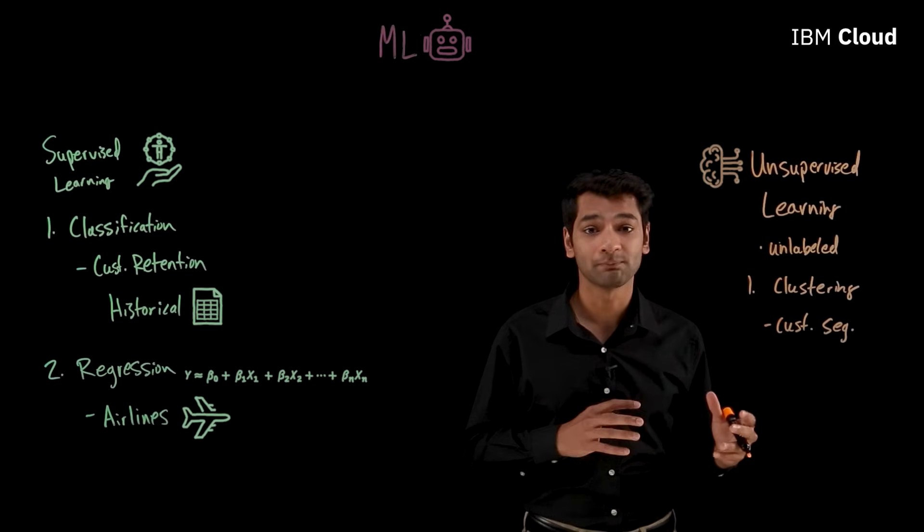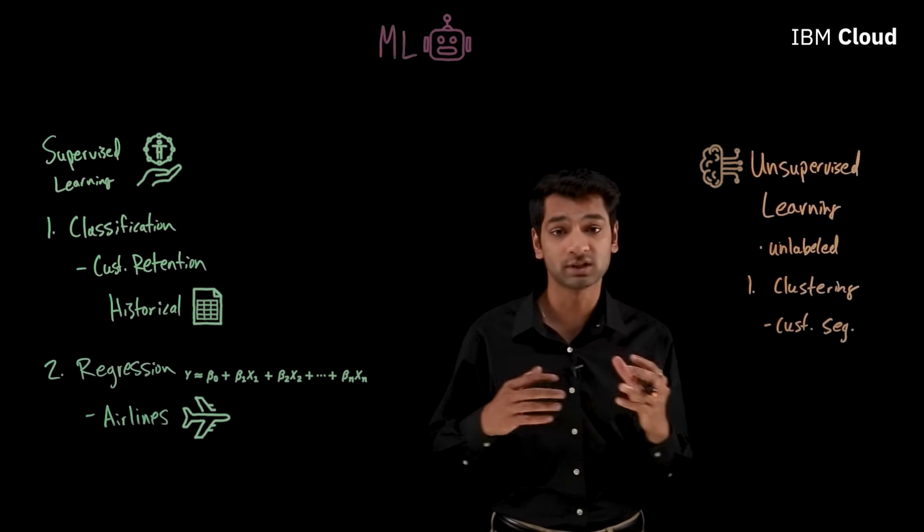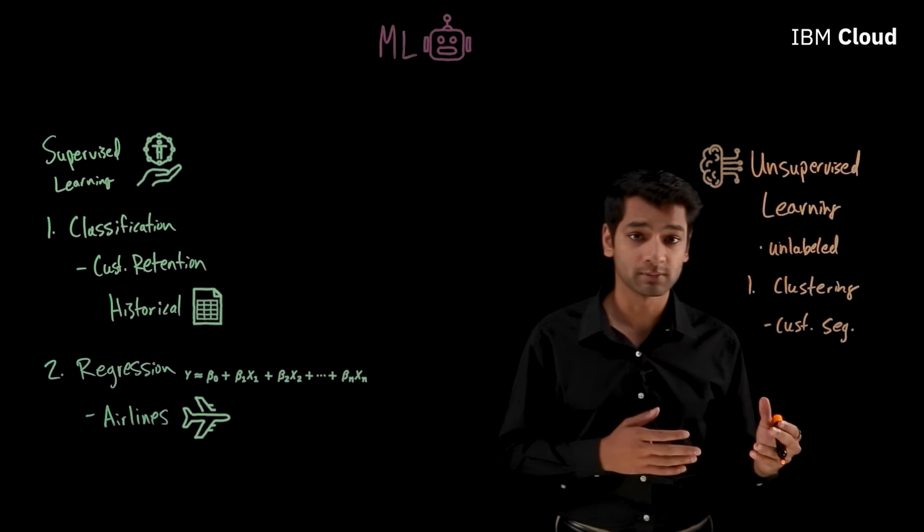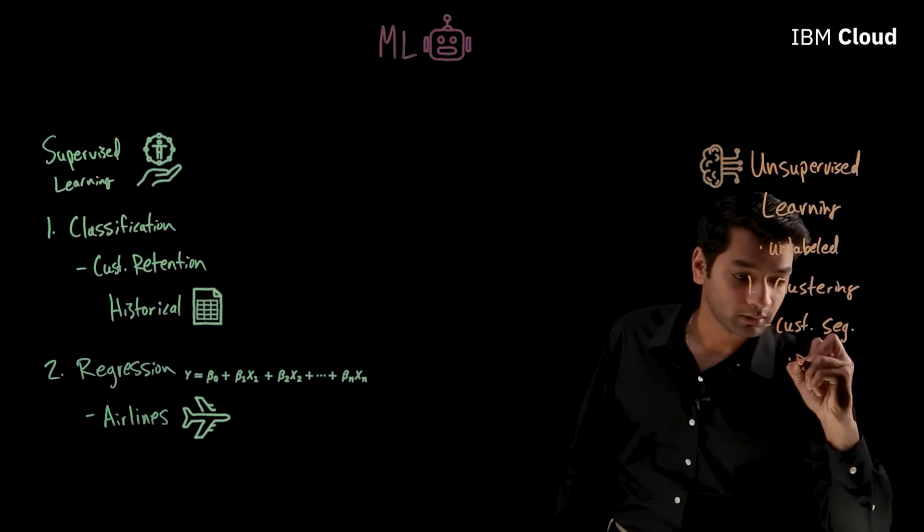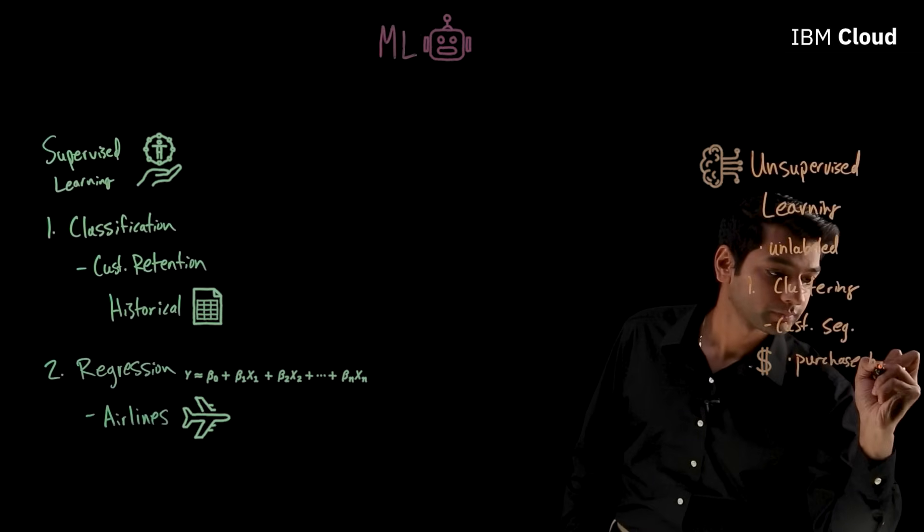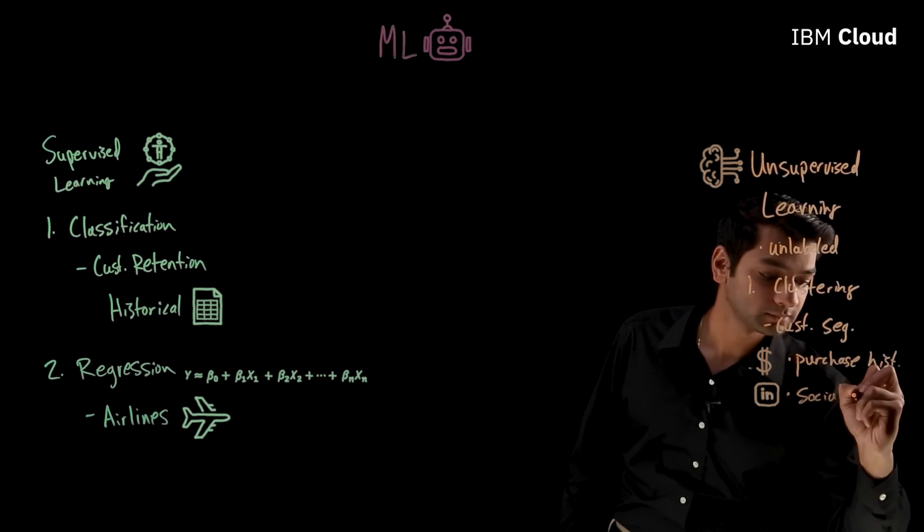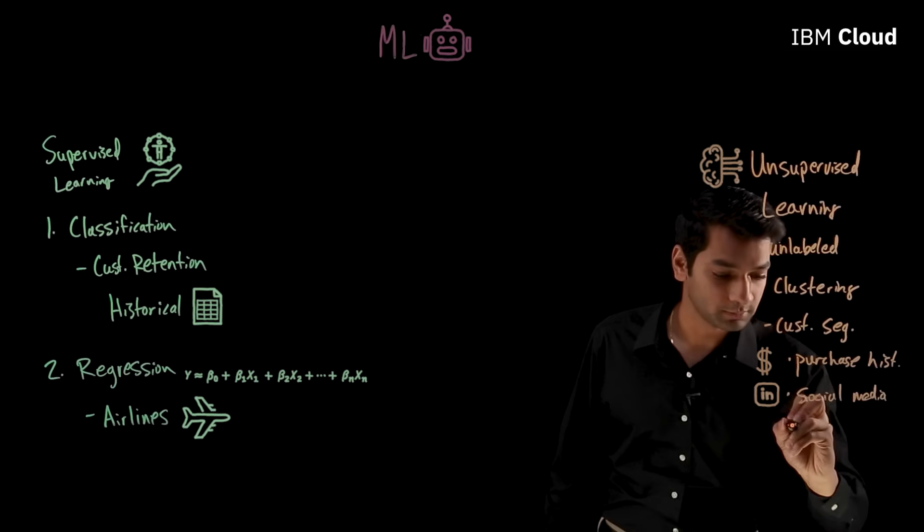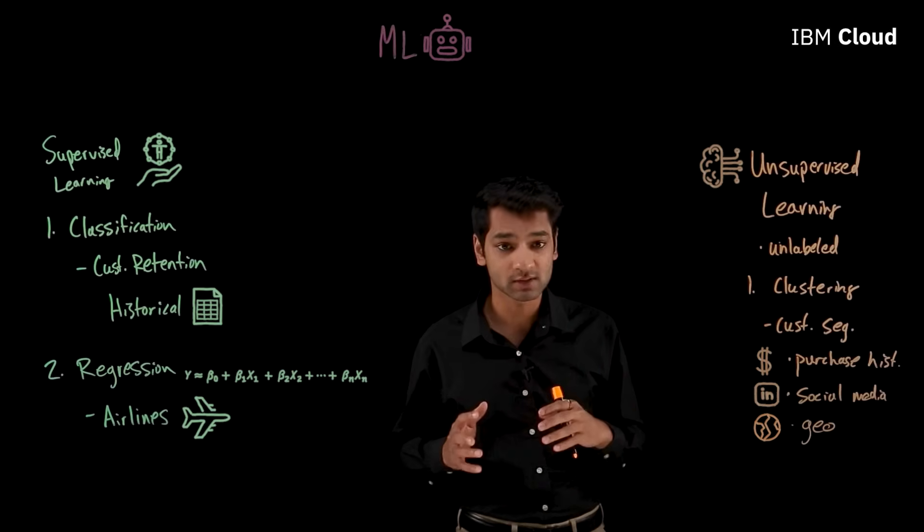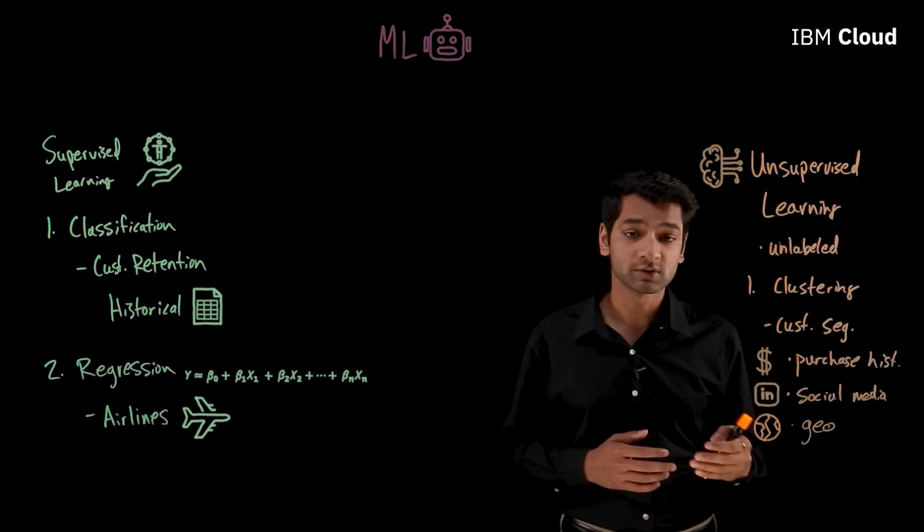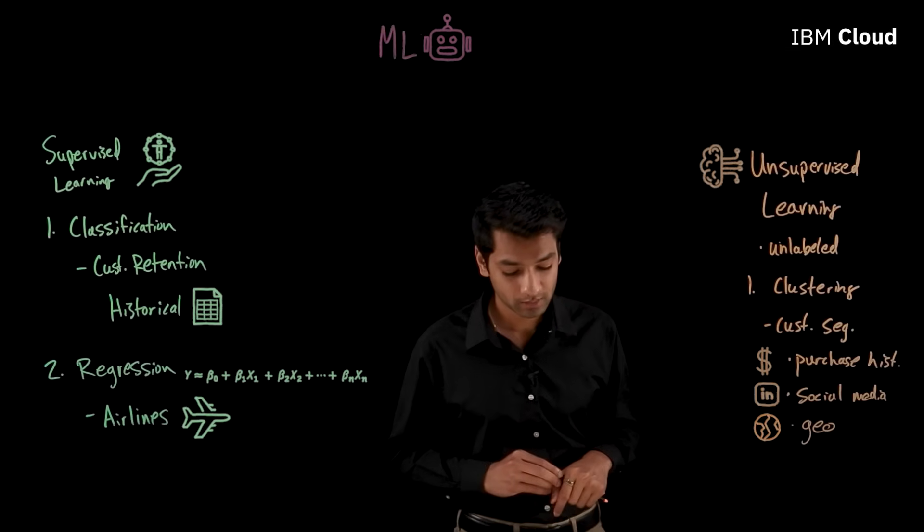So that they can connect with them in the most relevant way. And oftentimes, it's not obvious or clear how certain customers are similar to or different from one another. And clustering algorithms can help take into account a variety of information on the customer, like their purchase history, their social media activity or website activity, their geography and much more to group similar customers into buckets so that we can send them more relevant offers, provide them better customer service, and be more targeted with our marketing efforts.